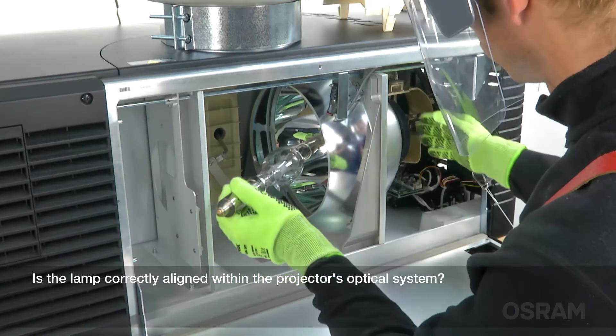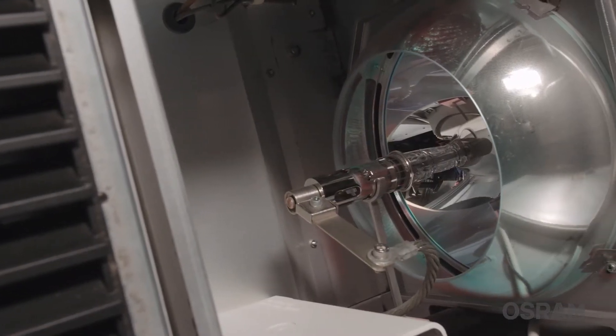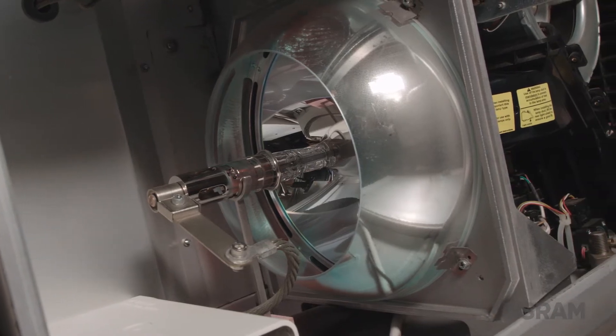Is the lamp correctly aligned within the projector's optical system? Correctly aligning the lamp within the reflector has a major impact on how much light the projector is able to produce on screen.